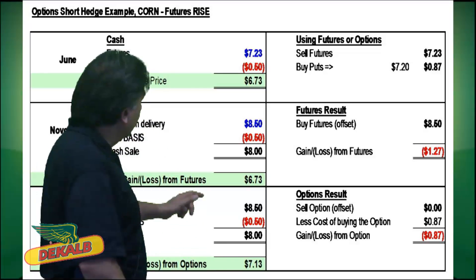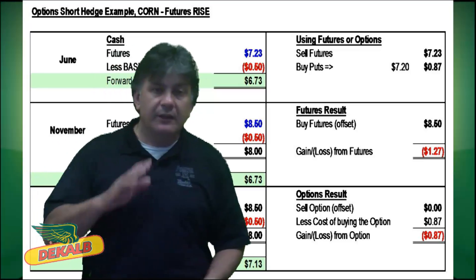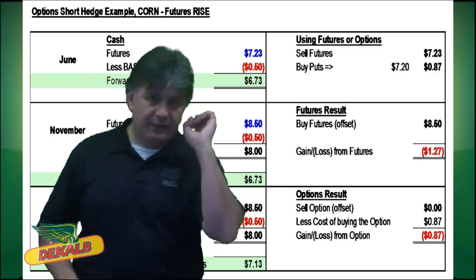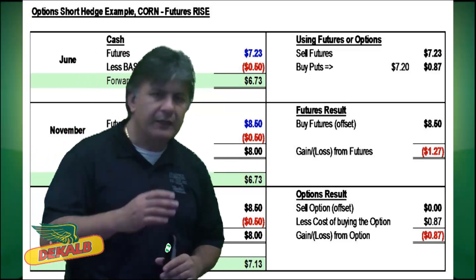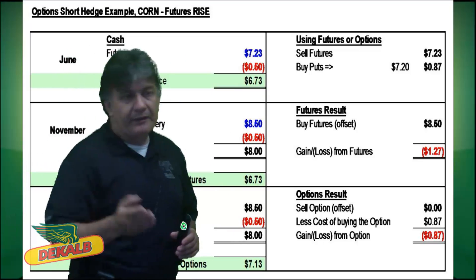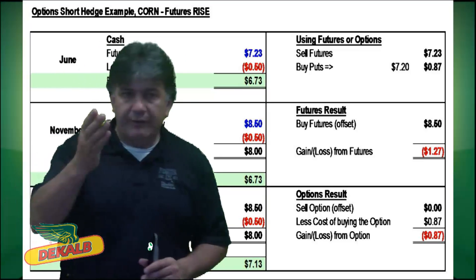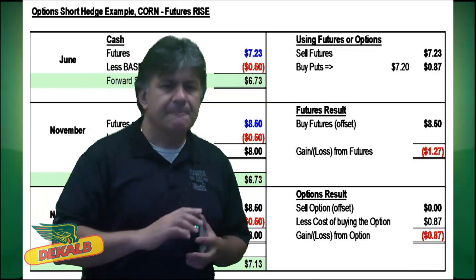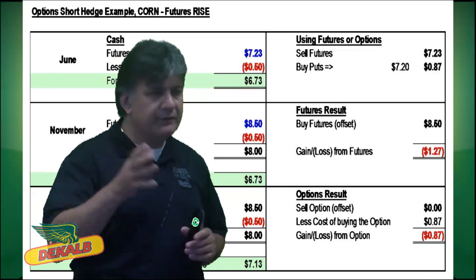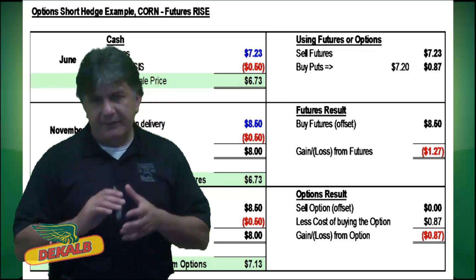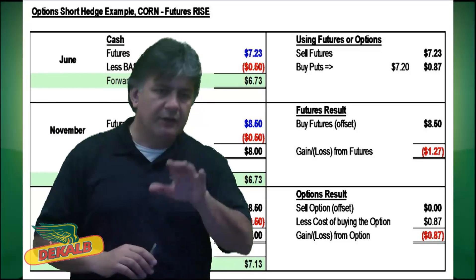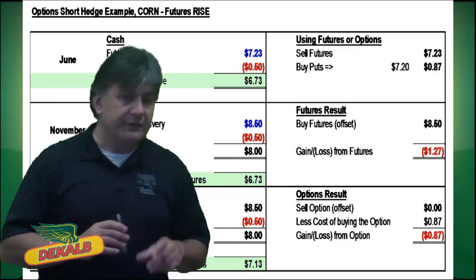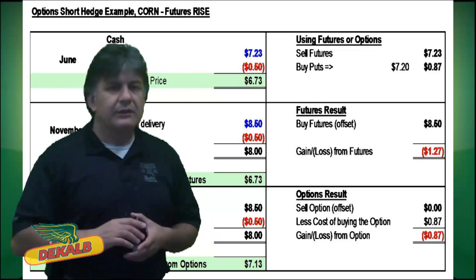In our next example, we're looking at corn when futures are rising. We're assuming that futures by November have risen to $8.50. The first outcome is that the producer does nothing and wins by selling in November at $8.50 plus or minus basis. However, if he sold futures, he's going to end up losing about $1.27 on the futures, so you subtract that from the cash price. If he bought that put, it's eventually going to expire worthless — he might have some time value left — but he subtracts that cost from the basis and futures price in November. His net amount is $7.13, still a little more than selling in June at $6.73.